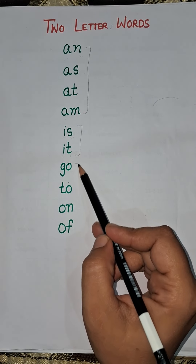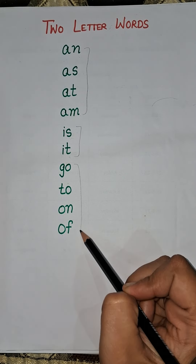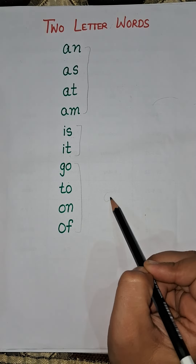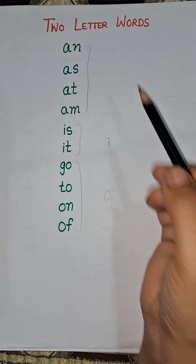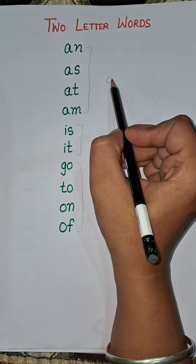Now these are all O letter words. These are O, these are I, and these are A.